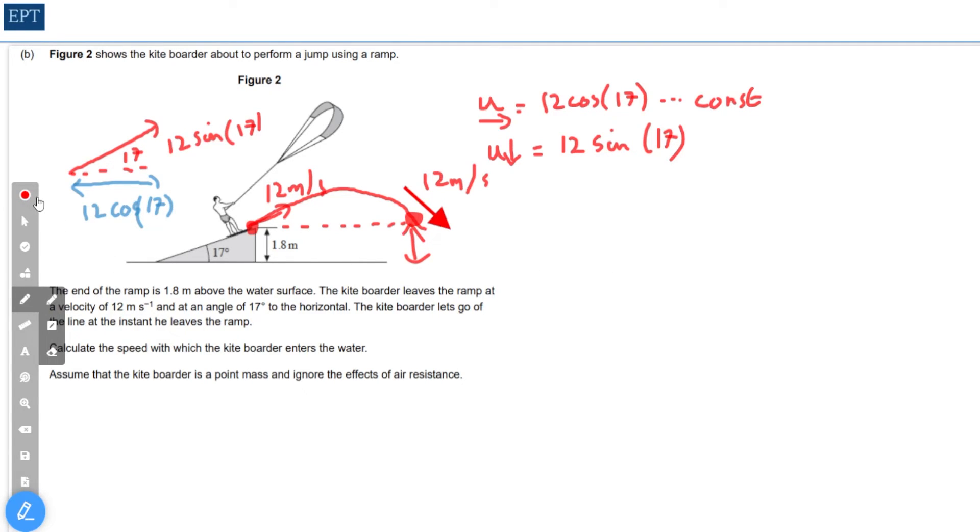The question really hinges on what happens to this downwards velocity over that 1.8 meters that it falls. There's an equation for that. We want to know the final velocity, which is going to be equal to the initial velocity squared plus 2as.